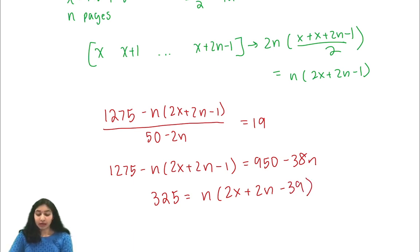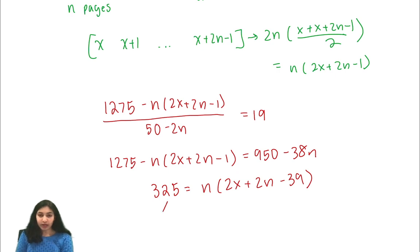So now we know that n must be a divisor of 325. Factorizing this gives 5 squared times 13.